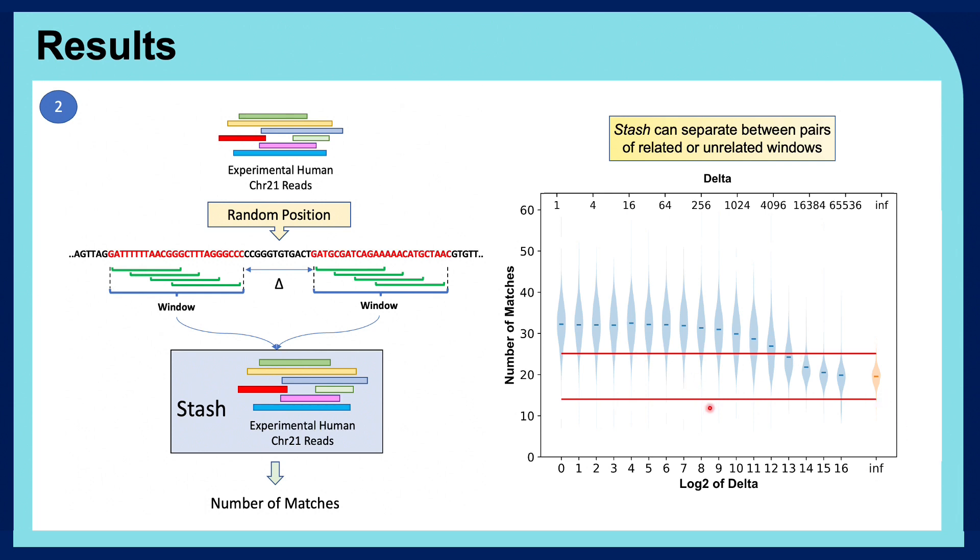These red lines show the confidence interval of 80% on the unrelated window distribution. And this whole process shows us how stash is able to separate between related and unrelated windows.